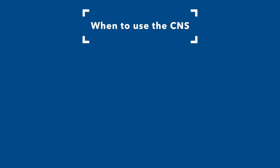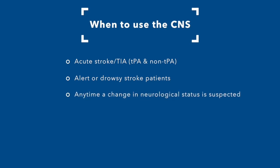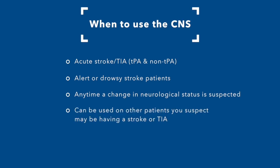When to use the CNS: acute stroke and TIA admissions, TPA and non-TPA patients, alert or drowsy stroke patients, and anytime a change in neurological status is suspected. It can also be used on other patients you suspect may be having a stroke or TIA. Please follow your organizational guidelines.